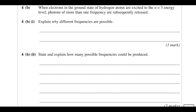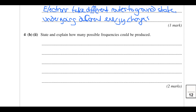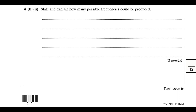An electron at n = 3 might go to n = 2, emit a photon, then to n = 1, emit a photon — or it might go all the way to n = 1 directly. State and explain how many possible frequencies there are. Drawing a diagram: from n = 3 we could go all the way to n = 1, or go to n = 2 and then to n = 1. There are three different energy transitions, so there are three possible photon frequencies.